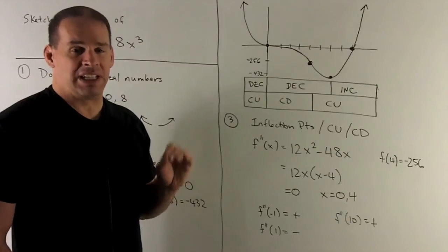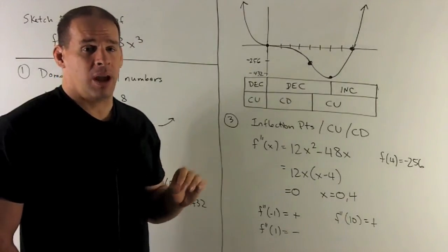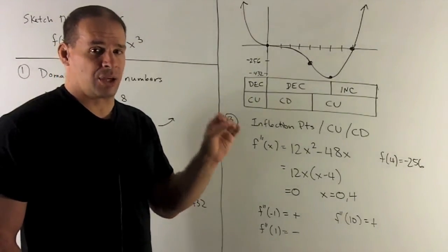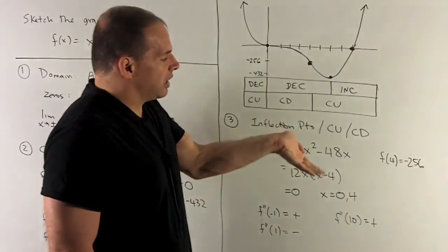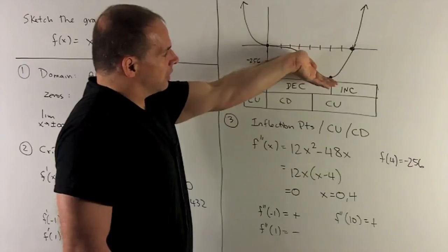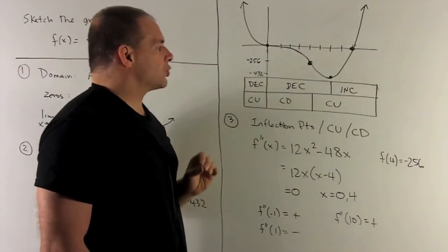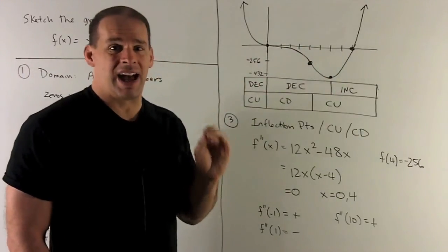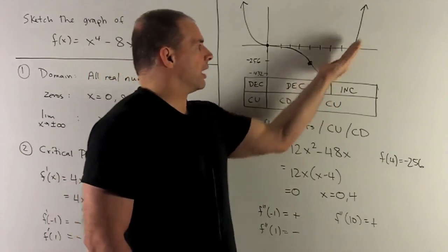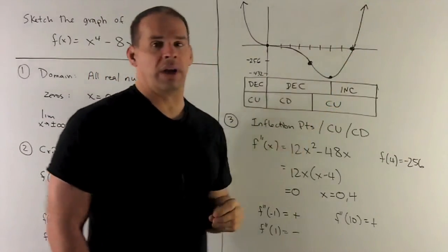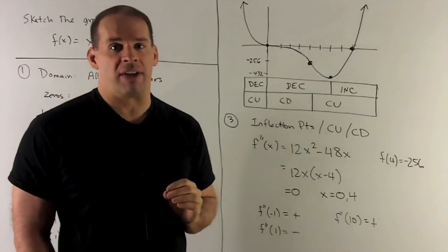Next region: decreasing concave up. We're connecting the points at x = 4 and x = 6. This is going to be decreasing concave up, so it'll look like that. And then for my last region, I have increasing concave up, so increasing concave up goes up like that. And we make sure we hit our zero at 8. So that's going to be the graph of my function.